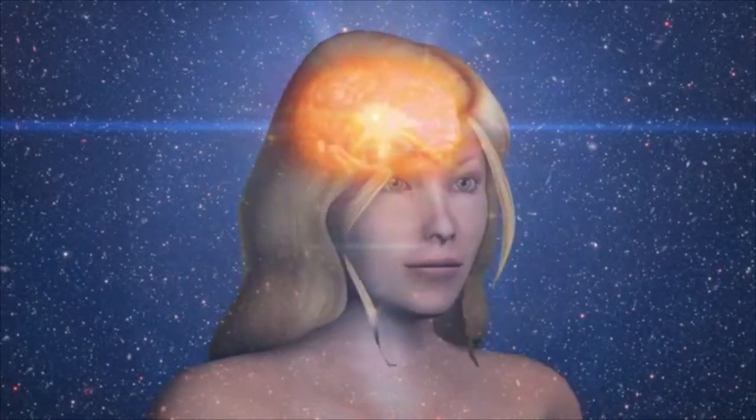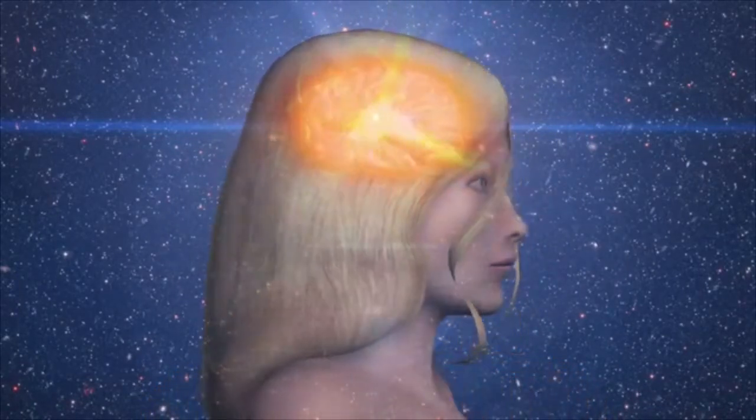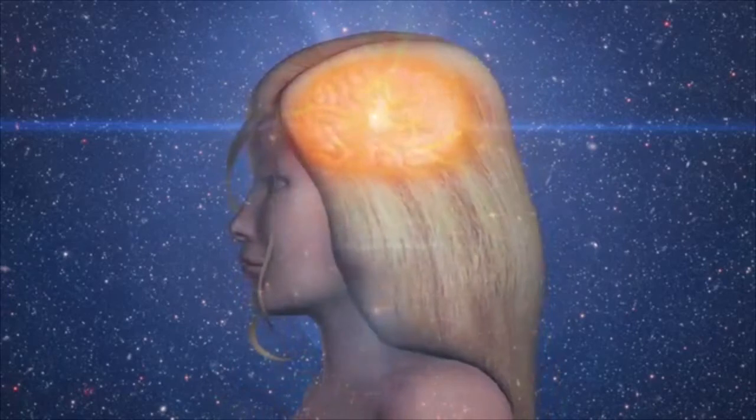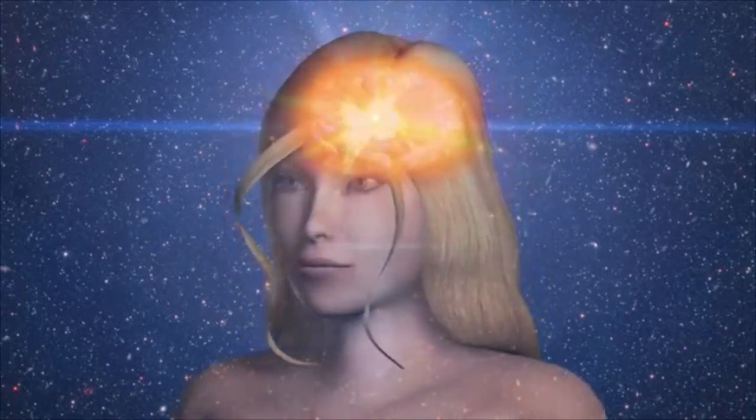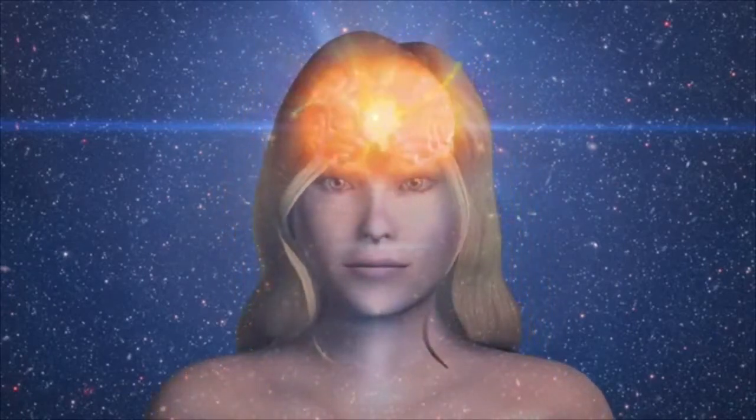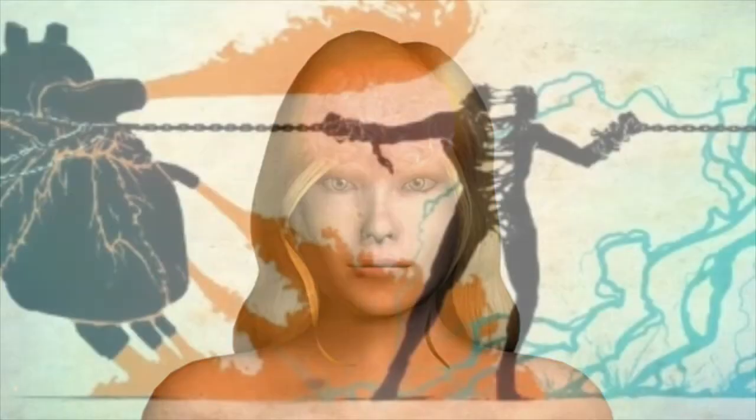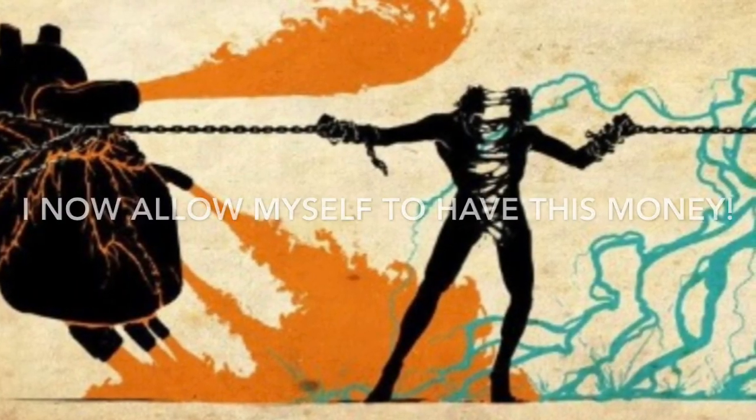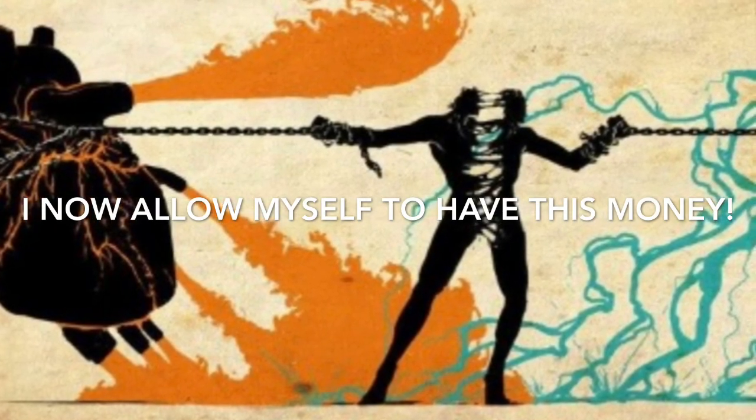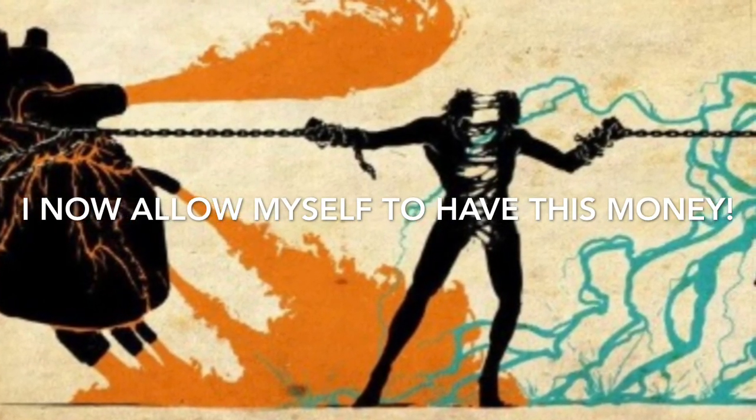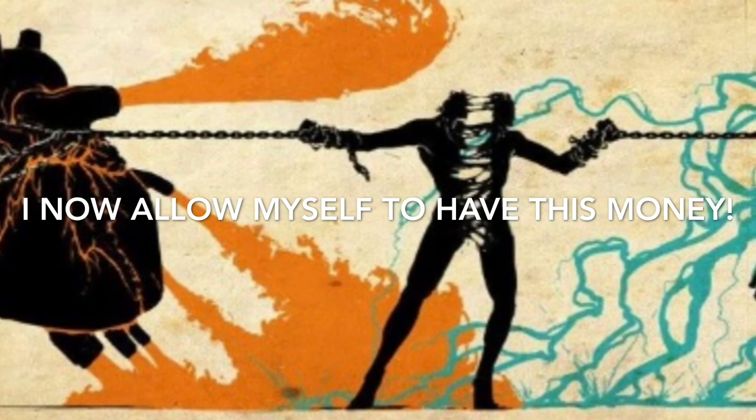Now that the mind and the brain are connected, think about what you want. See it in your mind and feel it in your heart. See the amount of money you want. See stacks of cash. Be very detailed. Now repeat: I now allow myself to have this money.